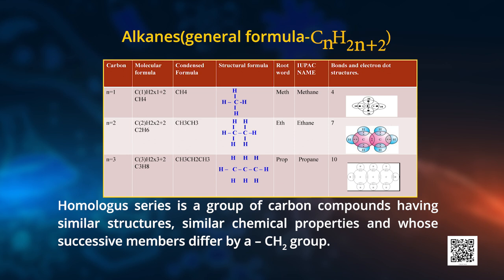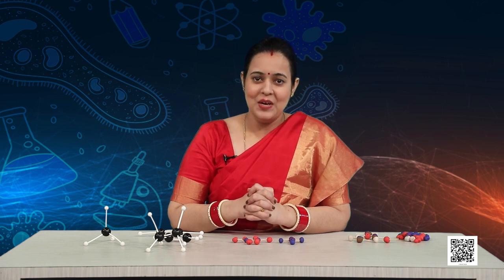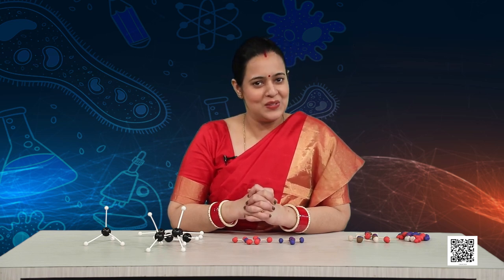In the same way, you will propose the structure of propane — you can take help from the table on screen. We have already done electron dot structures of carbon dioxide and oxygen molecules. We will take help of that idea and try to draw the electron dot structure of ethane. Each carbon has four electrons in the outermost shell and hydrogen has one electron; all hydrogens share one electron with carbon. Your task is to draw the electron dot structure for propane.